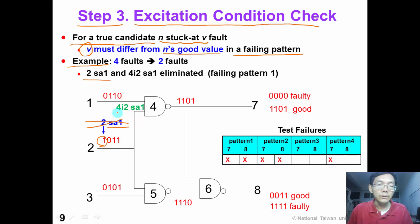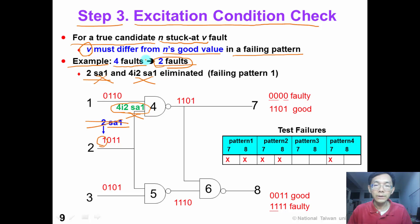Similarly, I2 stuck-at-1 should also be eliminated. Continuing from step 2, where we had 4 faults, after step 3 we can eliminate these 2 faults, so we are left with only 2 faults in the candidate fault list.